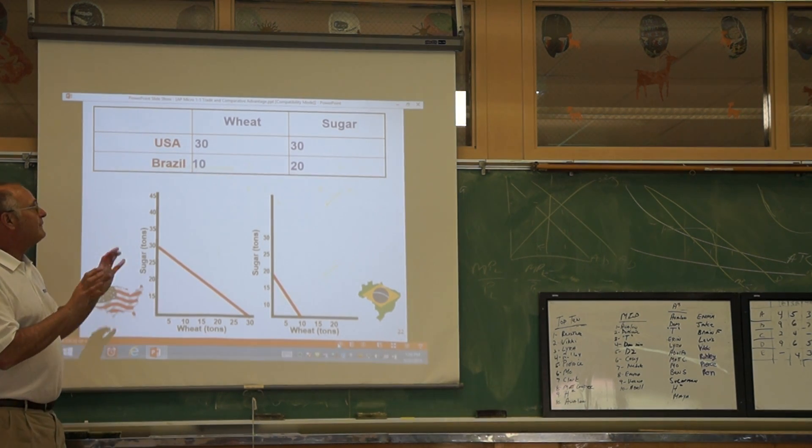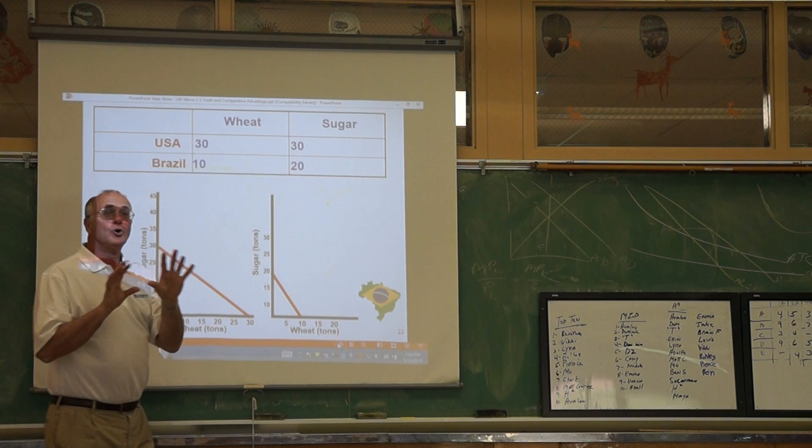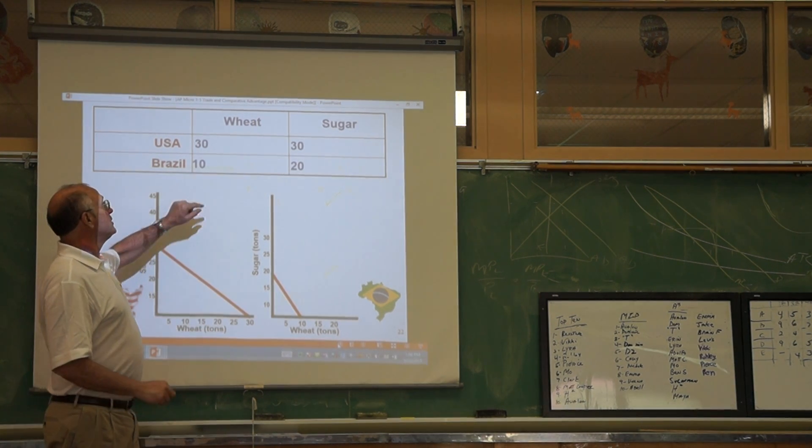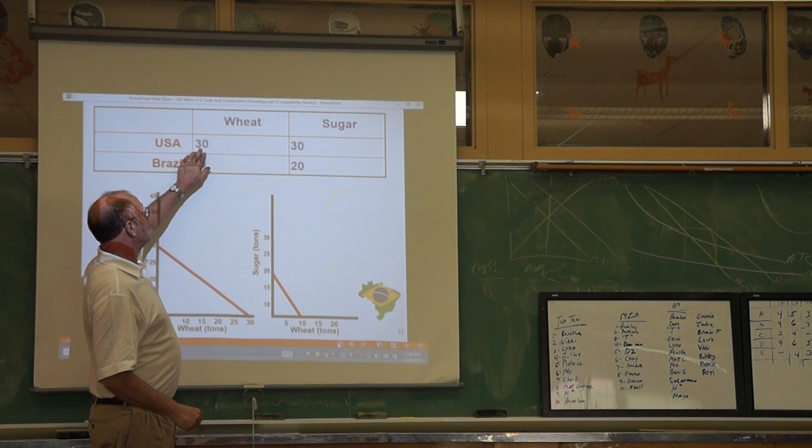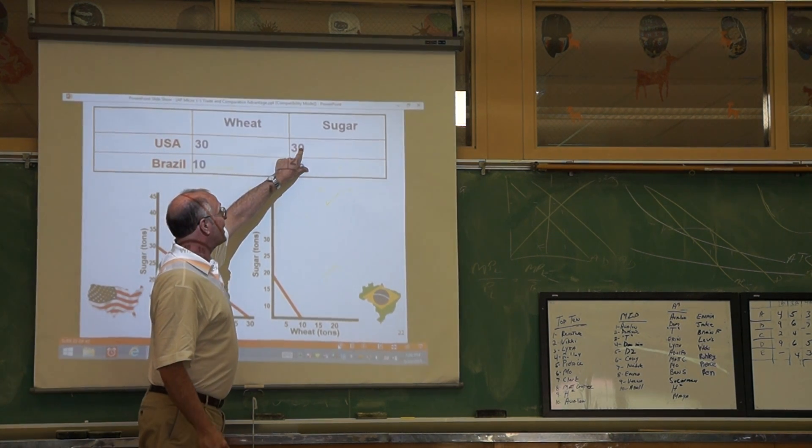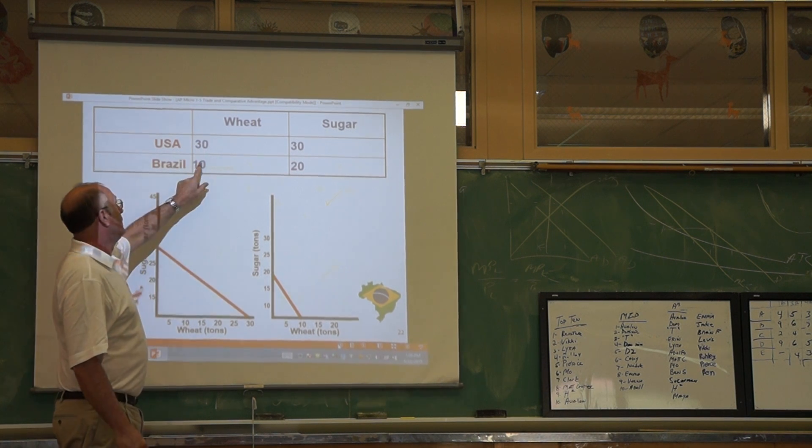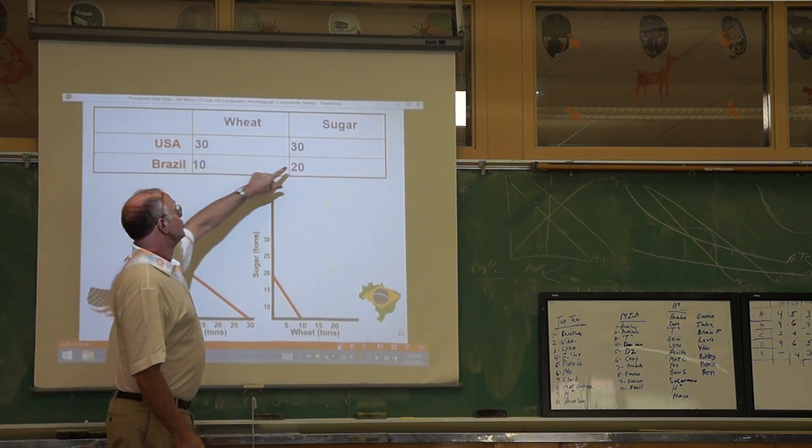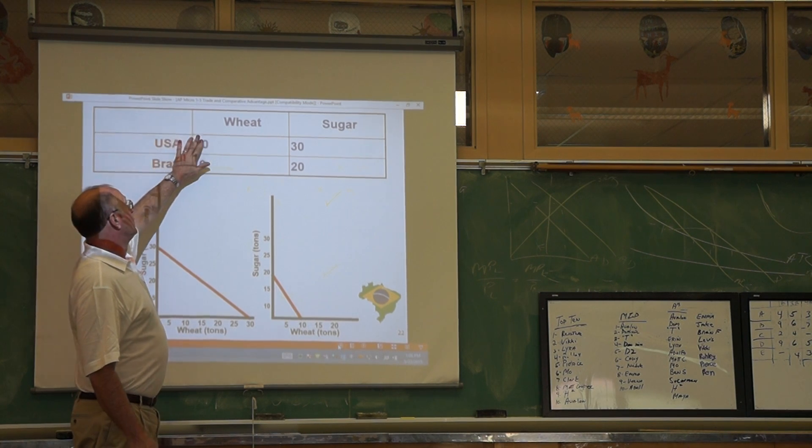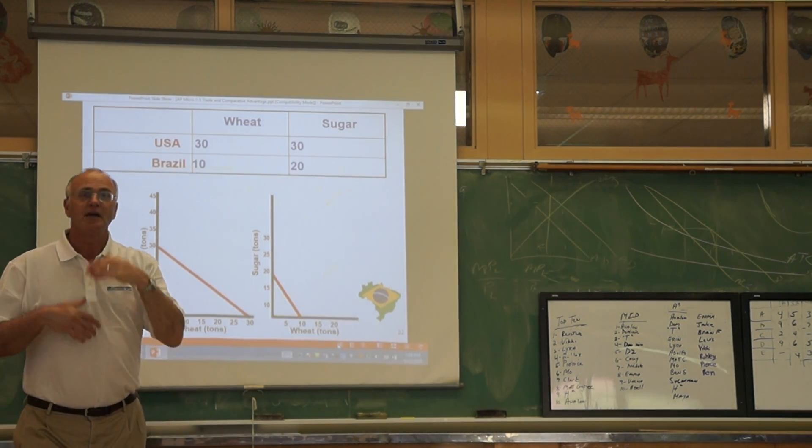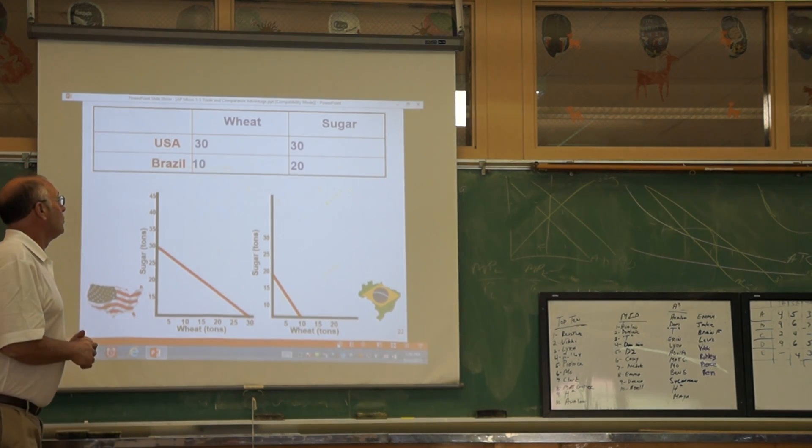Just to repeat, always remember who has the lowest opportunity cost. When you're taking the other—if we're looking at wheat, it's the other product, sugar, over wheat. 30 over 30 gives you 1. For Brazil, 20 over 10 gives you 2. The United States at 1 has the lowest opportunity cost, therefore they specialize in wheat.